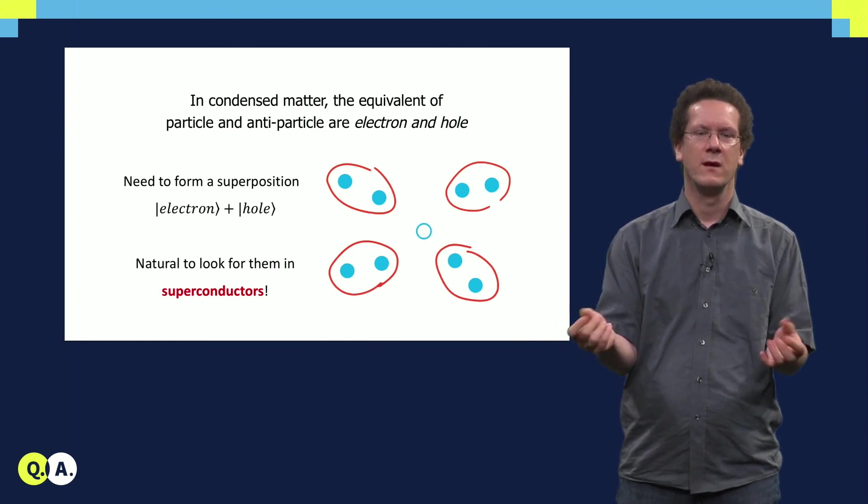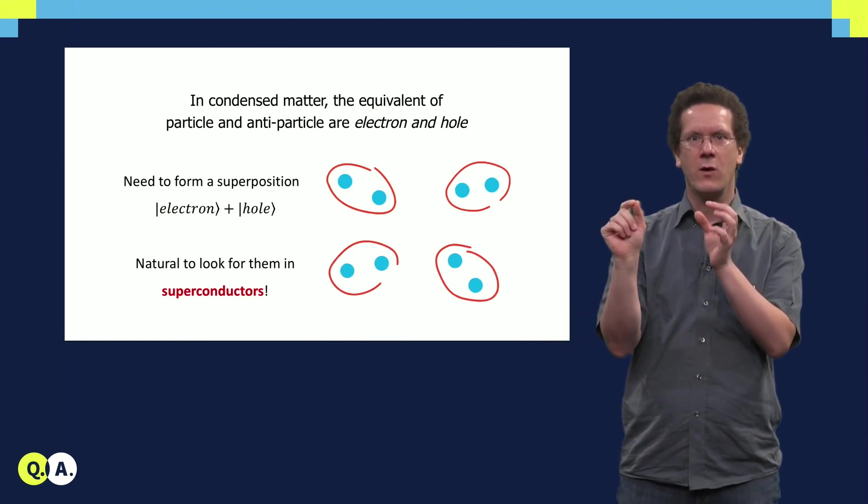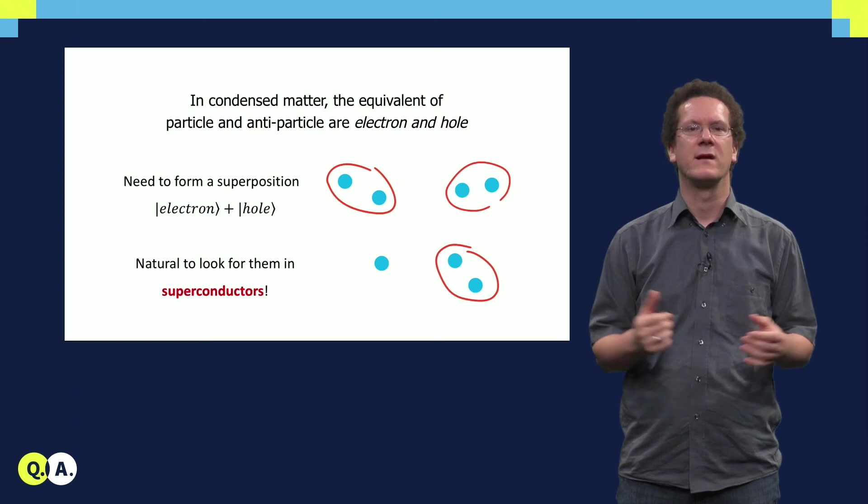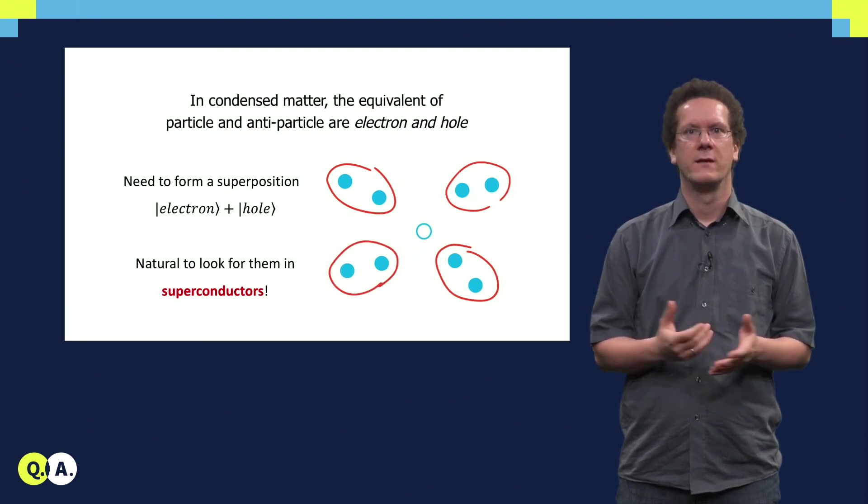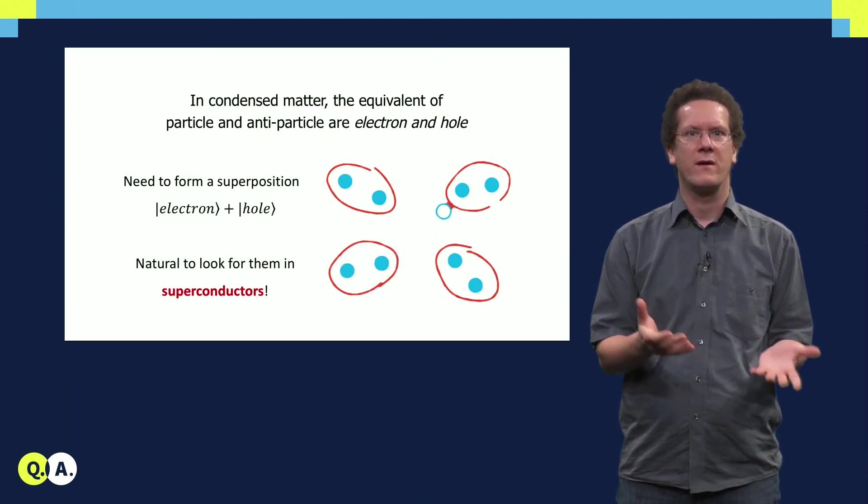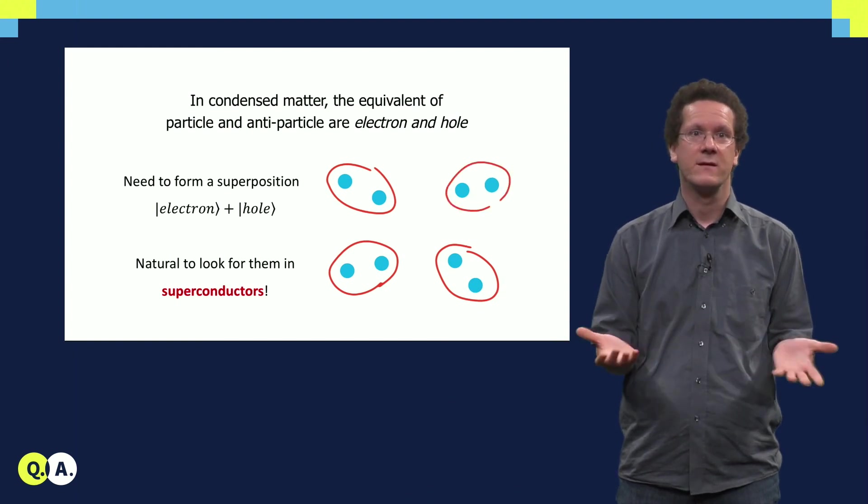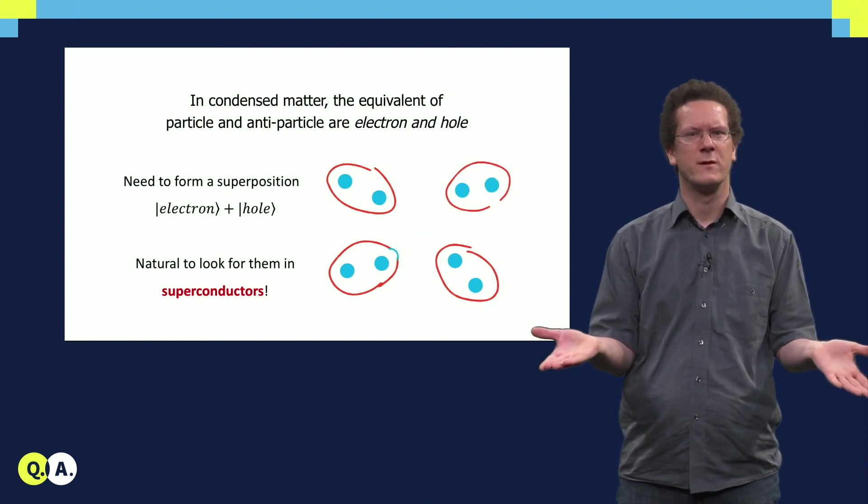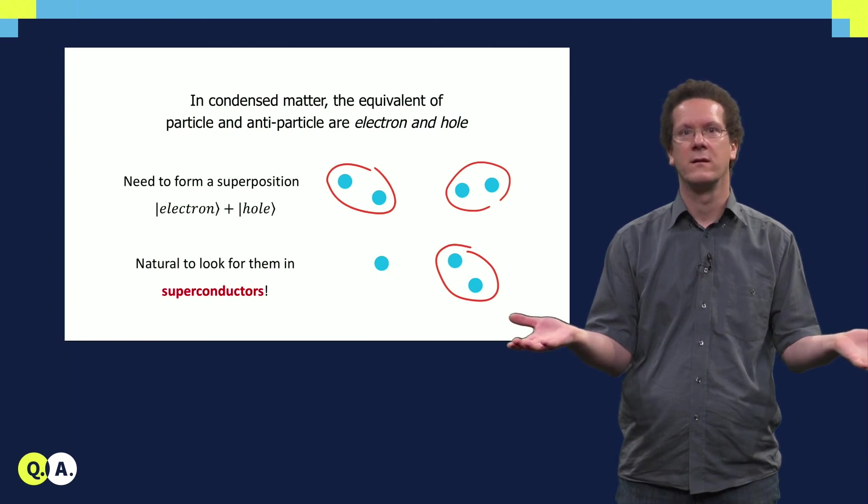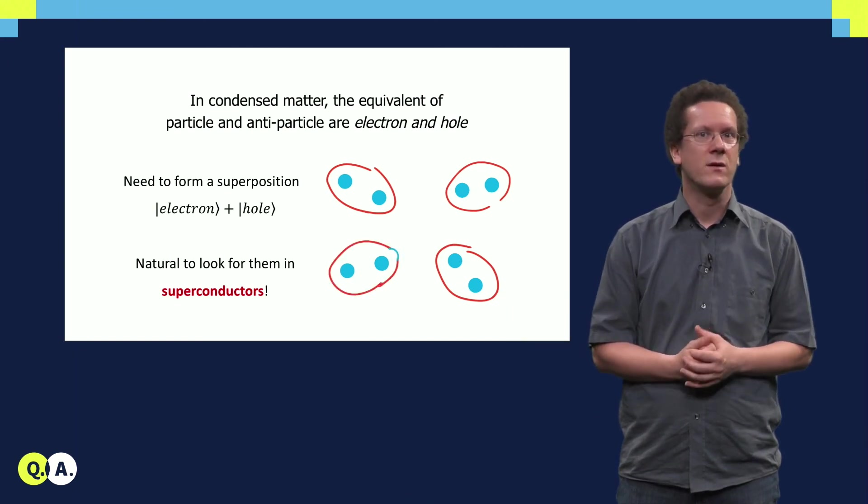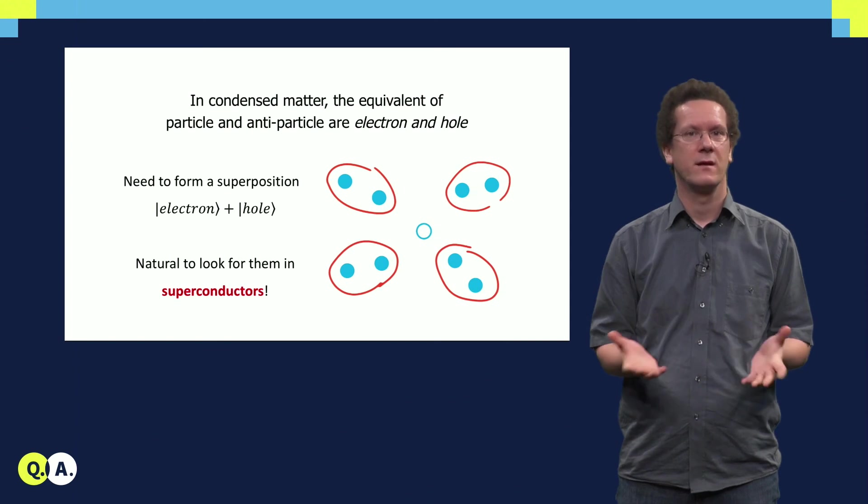Suppose now we have a single hole in our system. But just take one Cooper pair out of the vast sea of Cooper pairs, then this Cooper pair together with the hole just looks like a single electron. The distinction between electron and hole are thus effectively blurred in a superconductor. Hence we can form a linear superposition of electrons and holes there. It is thus very natural to look for Majorana states in superconductors.